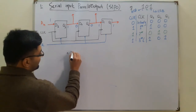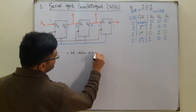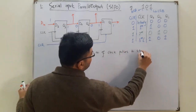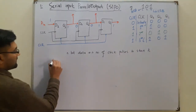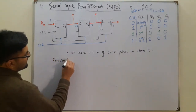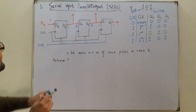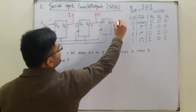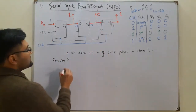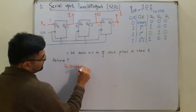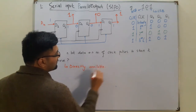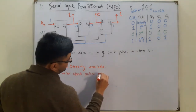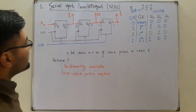It was a 3-bit data and it required three clock pulses to store it, which means n-bit data would require n clock pulses to store it. How do we retrieve it? In this case, since we directly have access to all outputs, we directly have a one here, a zero here, and a one here — they are directly available to us. No clock pulses are required to retrieve the data.